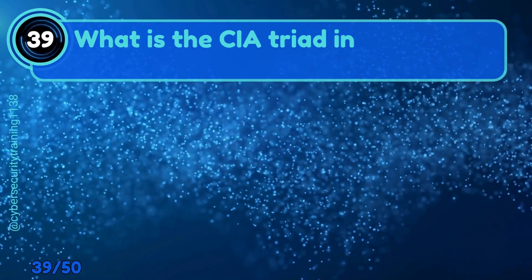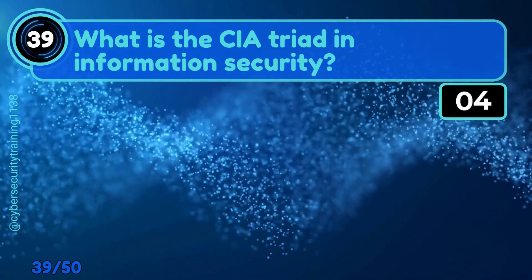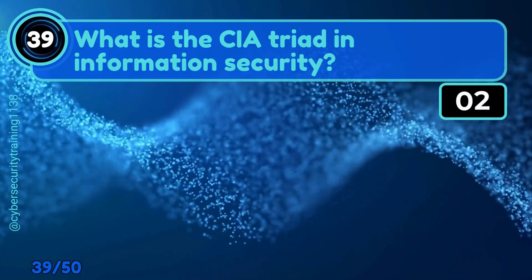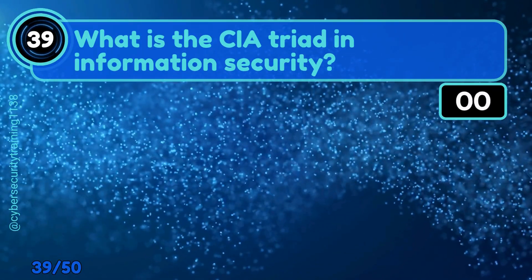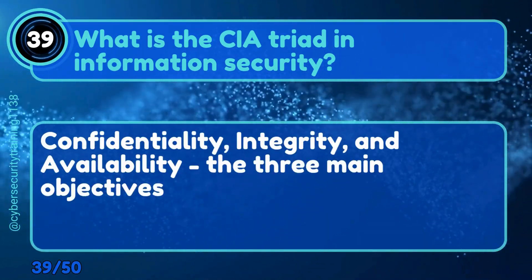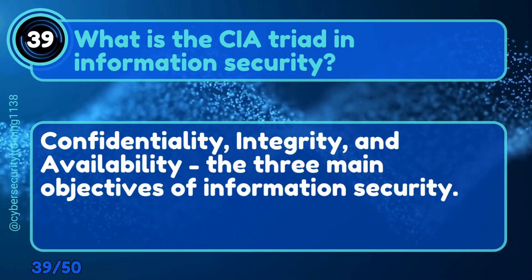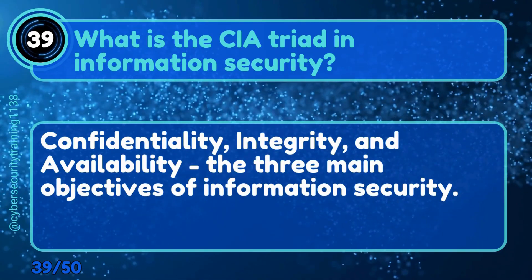Question 39: What is the CIA triad in information security? Confidentiality, integrity, and availability — the three main objectives of information security.